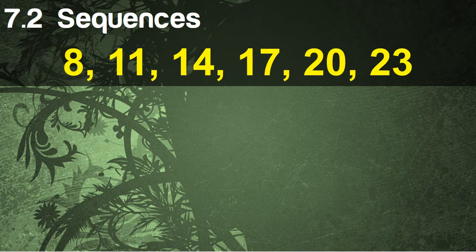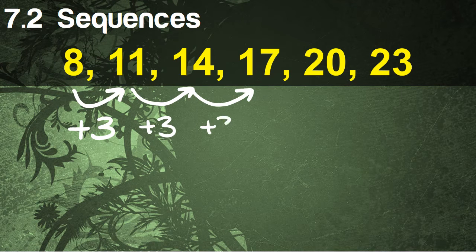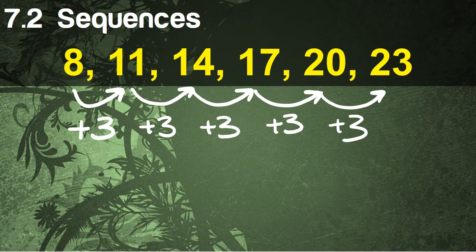Here's how this looks: we're given the sequence 8, 11, 14, 17, 20, and 23. We figure out how we go from 8 to 11, and that pattern has to be the same throughout. From 8 to 11 we're adding 3, from 11 to 14 adding 3, 14 to 17 adding 3, 17 to 20 adding 3, 20 to 23 adding 3. So the rule written using n would be n + 3.